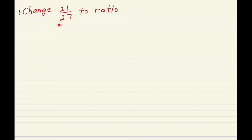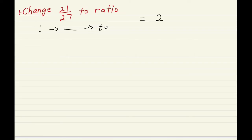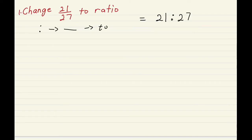Let's go straight to examples. The first question says: change 21 out of 27 to a ratio. Since the two dots can be expressed as the division sign, and we're looking for a ratio, the answer becomes 21 is to 27. If we could have reduced it to a lower term we would have done that, but with this question it just remains as that.